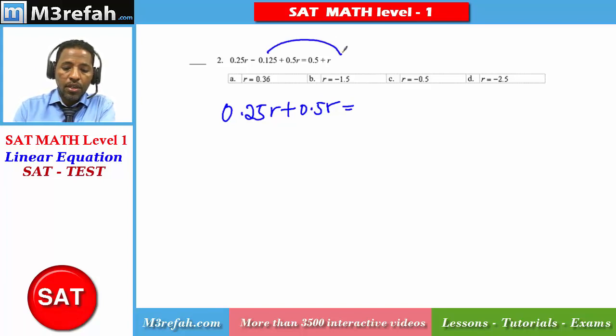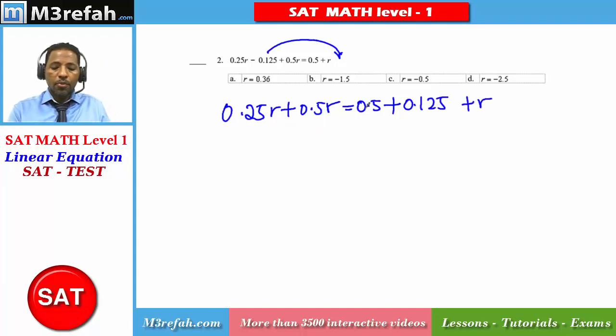I'll move this one to the other side where it turns into positive. So you have 0.5 which is already there plus 0.125 plus r. 0.25r plus 0.5r is 0.75r equal to 0.5.